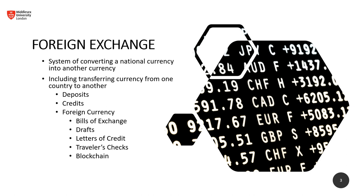Foreign exchange is a system of converting a national currency into another. This might include transferring currency from one country to another. For example, if you're traveling in the United Kingdom and brought Canadian dollars, you need British pounds. Alternatively, if you're starting a business in Thailand, you would exchange your home currency — say British pounds — into Thai currency. This transaction might include deposits, credits, and foreign currency.